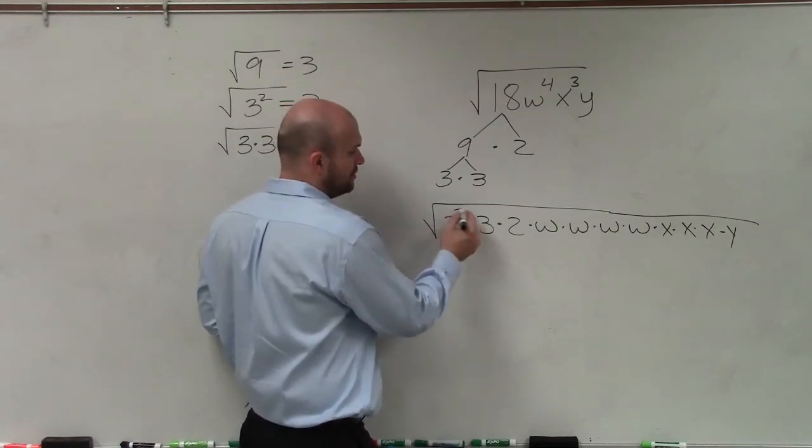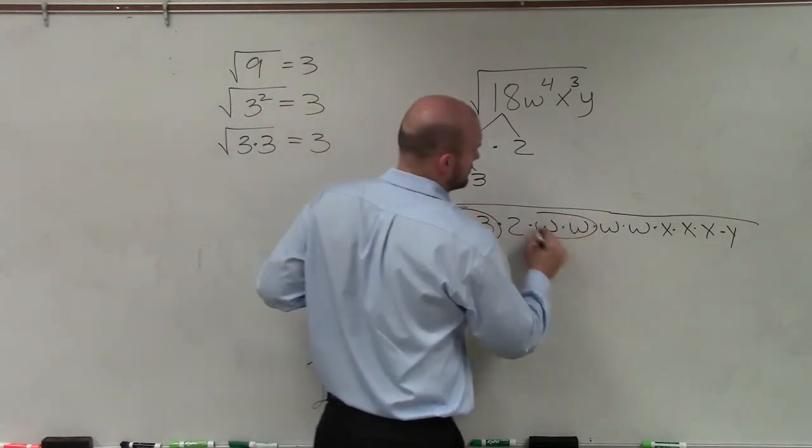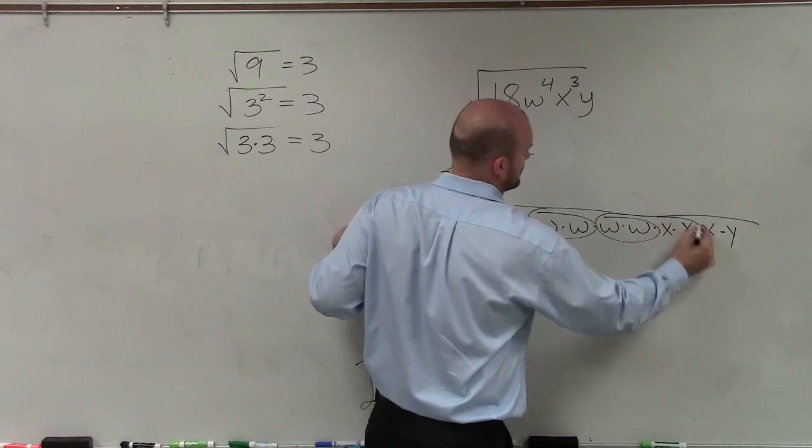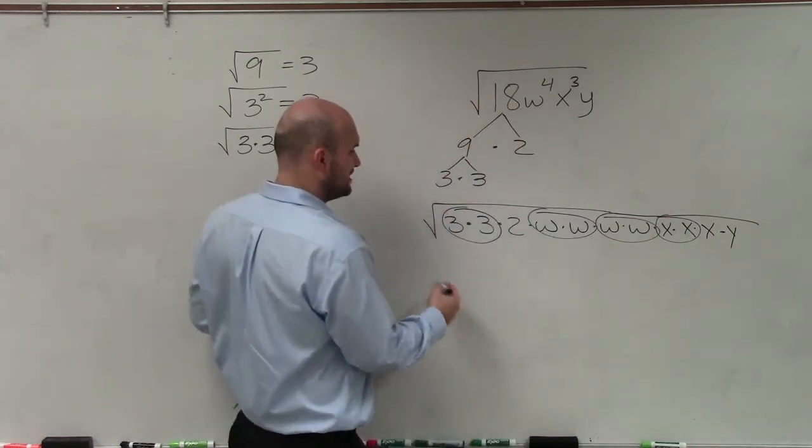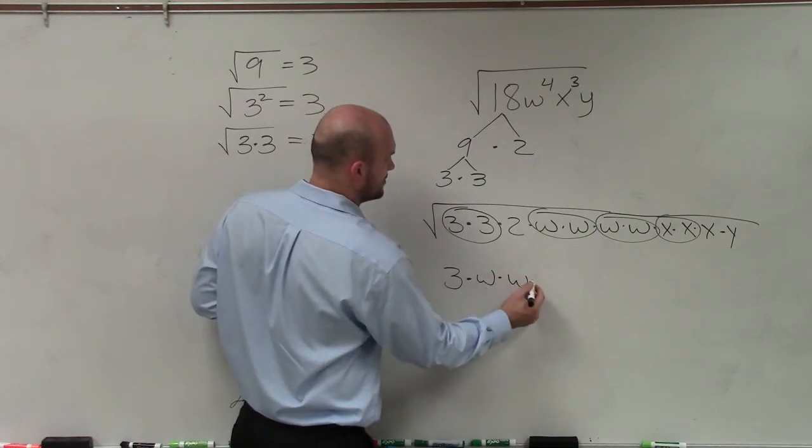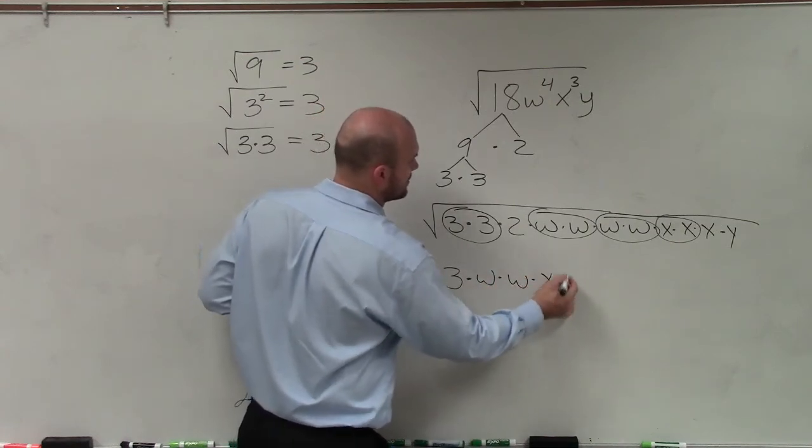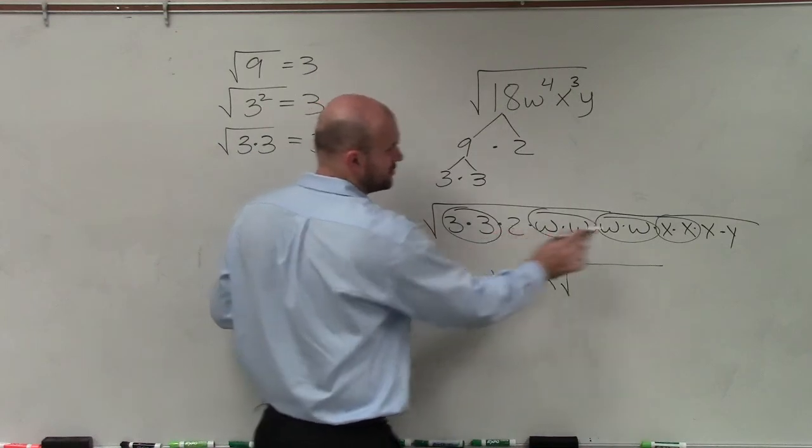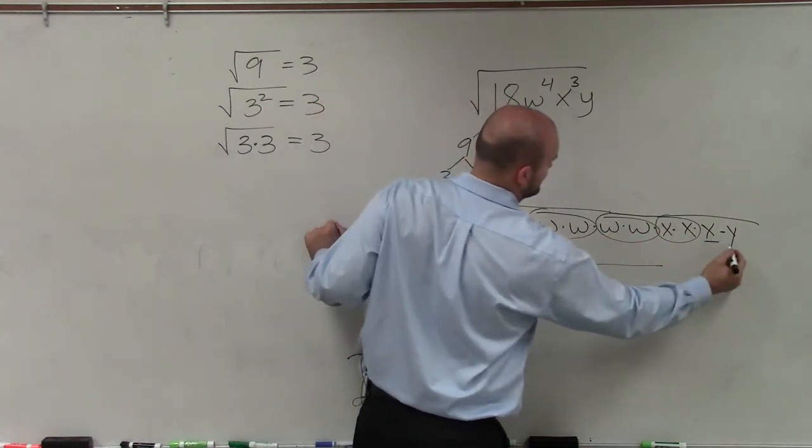But now we just circle all of our pairs. And remember, every pair we can take out. So I have 3 times w times w times x times the square root of 2xy.